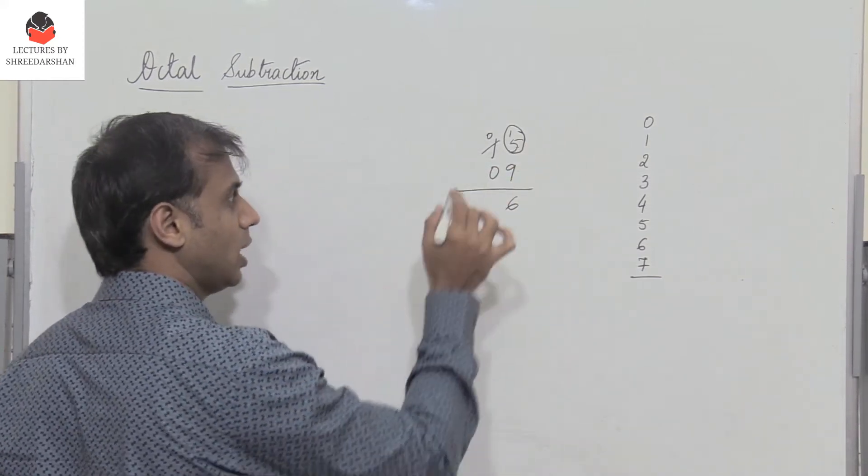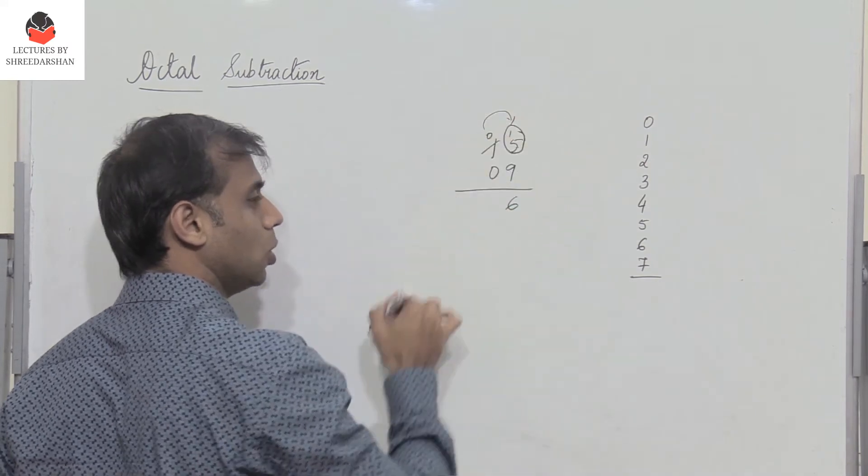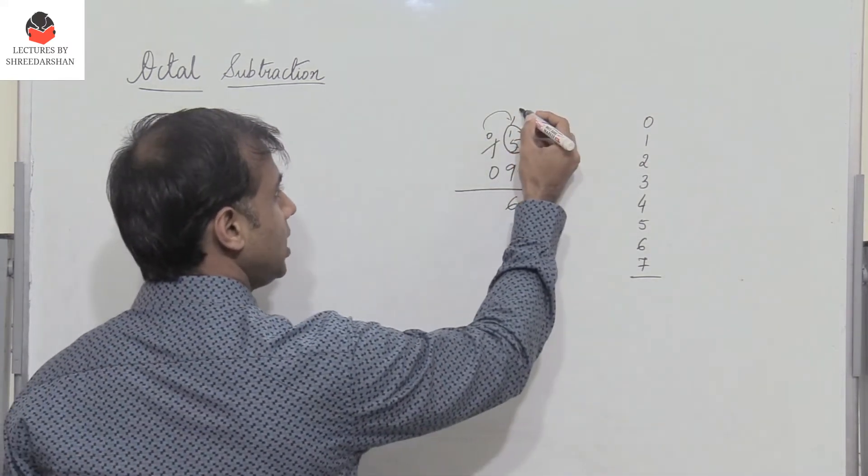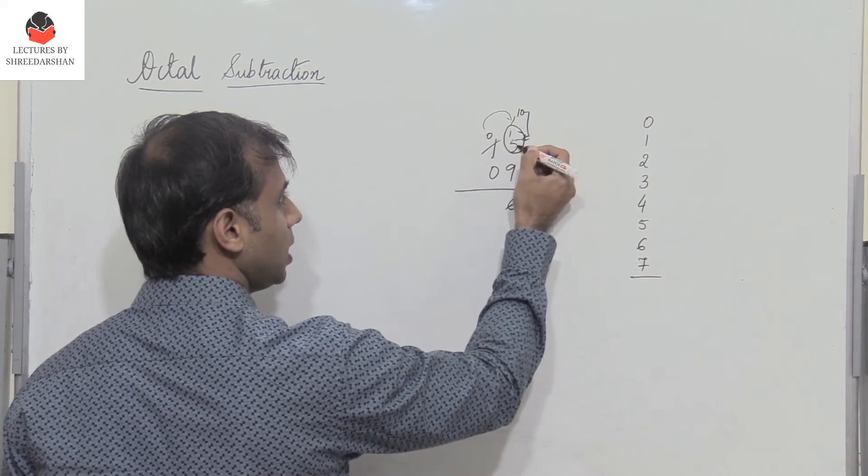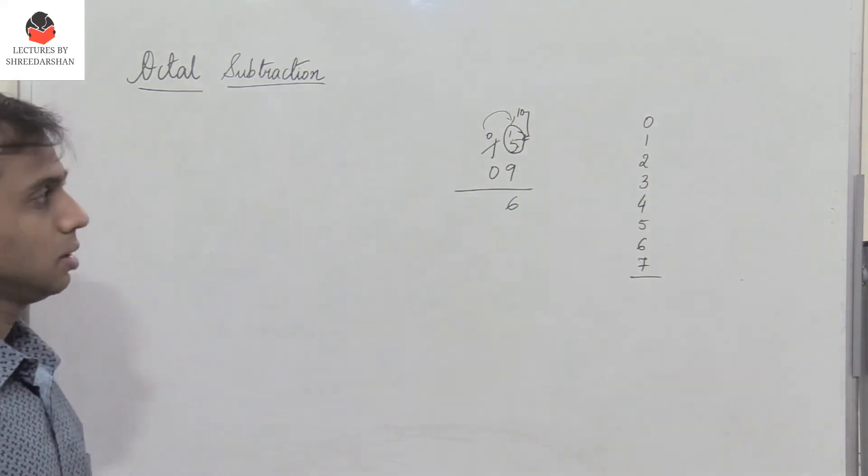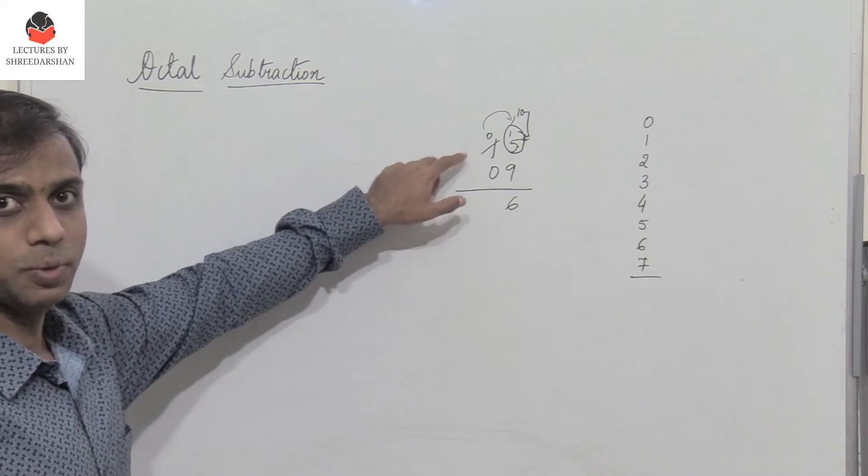Now how does this become 15? When I actually take a borrow of 1, we are actually adding the decimal value 10 to this number. So 10 plus 5. So this is what we do when we perform subtraction.